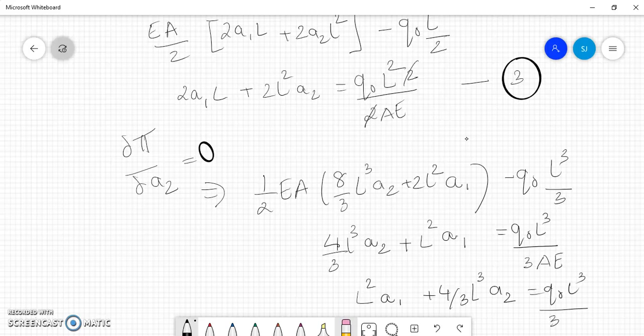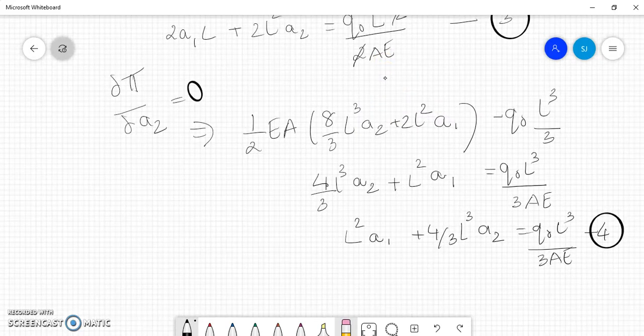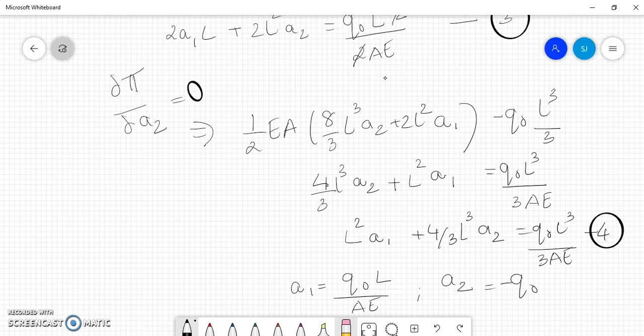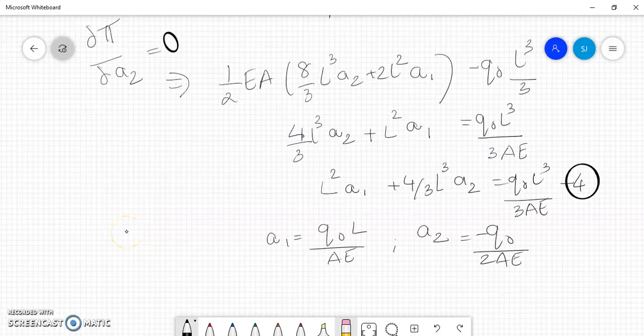So now we have two equations and two unknowns. When we solve for this, we will get a1 = Q0L/2AE and a2 = -Q0/2AE. The problem was to determine the equation or the expression for displacement. We have got the values of a1 and a2.